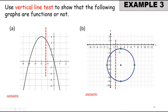Now let's look at Example 3: use the vertical line test to show whether the following graphs are functions or not. Looking at the first one, you can see the graph and the vertical line that we draw. From this drawing, we notice that it cuts at only one point, so this graph is a function.